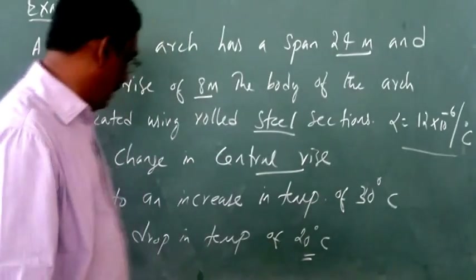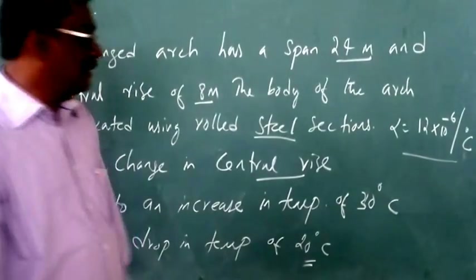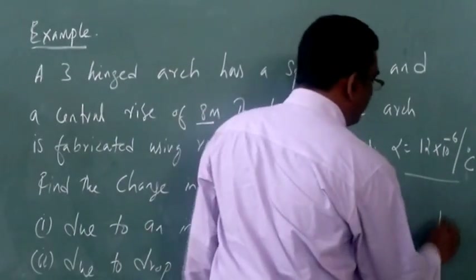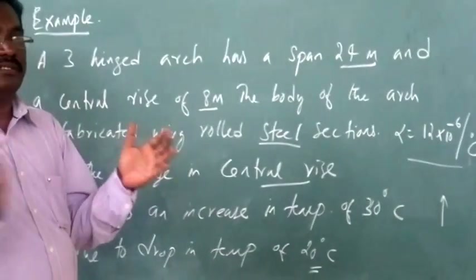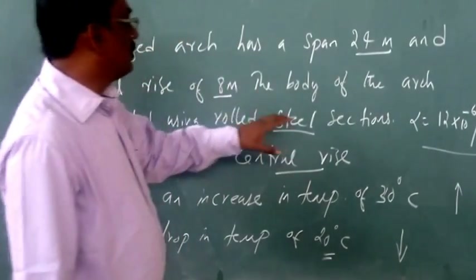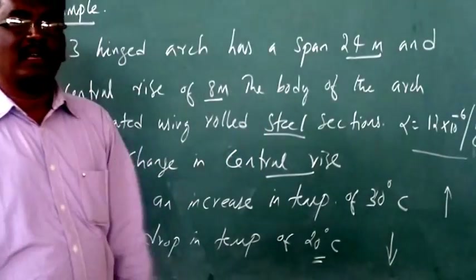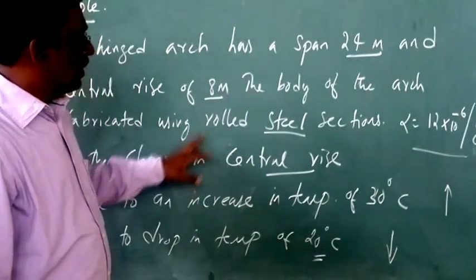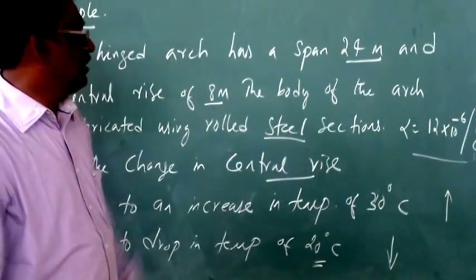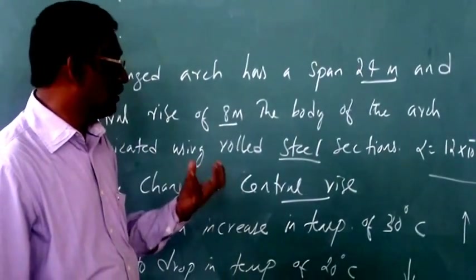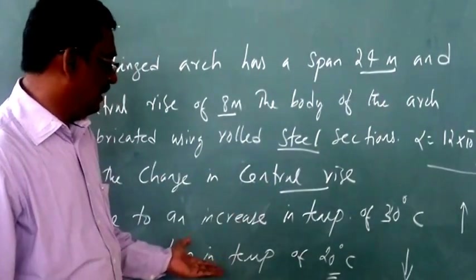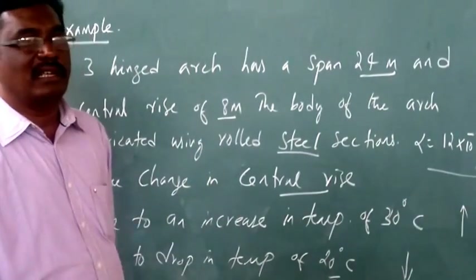Two cases are given — one is the increase in temperature and the other is the drop in temperature. Due to the increase in temperature, the arch will start elongating and the crown will go up. Due to the drop in temperature, the arch will start shrinking so the crown will go down. It is also important to note that the arch is made up of a rolled steel section, so there will be a definite change in profile configuration. Let us get into the problem and directly substitute the values into the given expression.